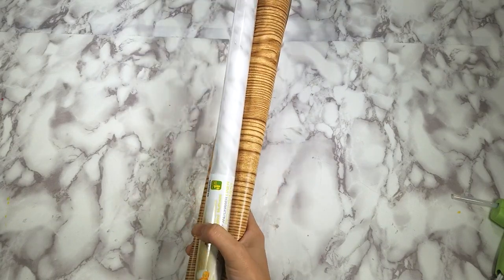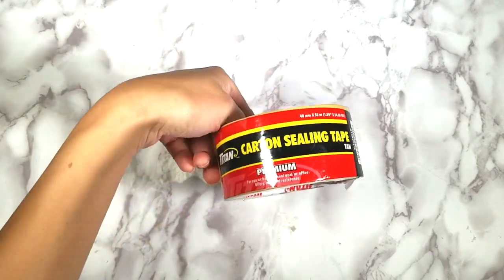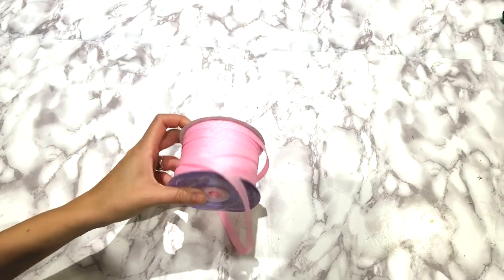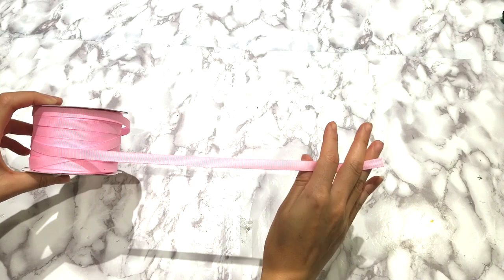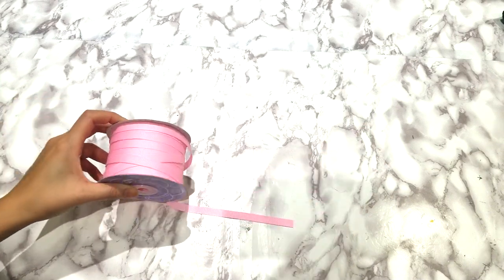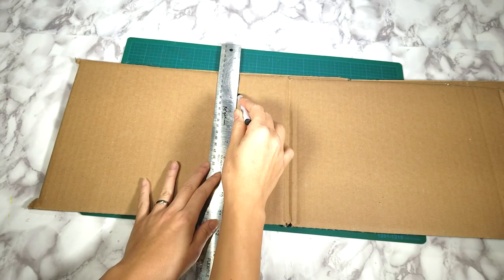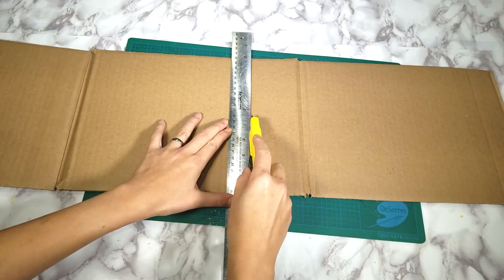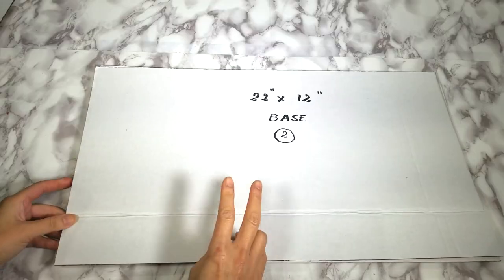Some tape, packing tape, 20 inches of grosgrain ribbon with a width of 3/8th of an inch or quarter of an inch.